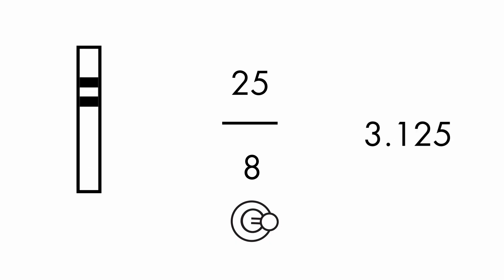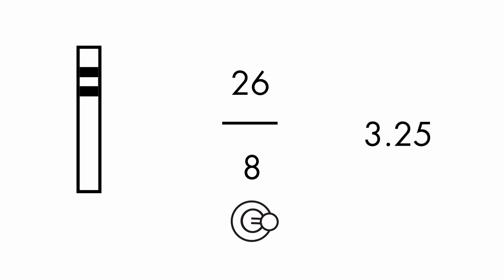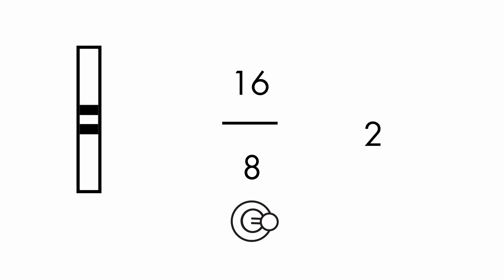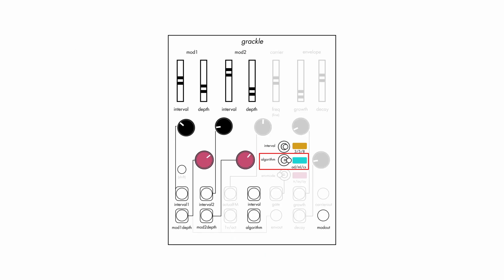Some of these combinations create musical intervals, such as a perfect fifth — a ratio of 1.5 — or an octave, a doubling in frequency. The mod oscillators are combined in one of three ways selected by the algorithm switch, each with their own distinct sound.